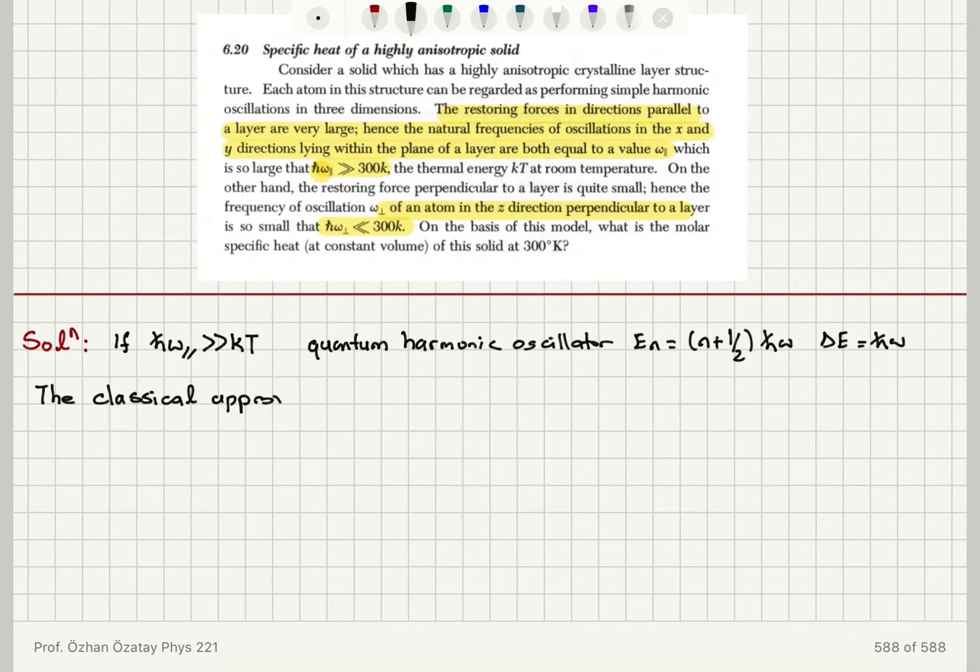The classical approximation should not hold. The temperature is too low. The room temperature is too low for this system. And therefore, oscillation modes parallel to a layer are not yet excited at room temperature.